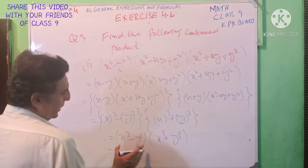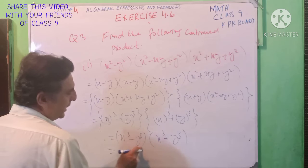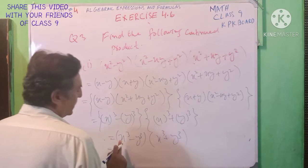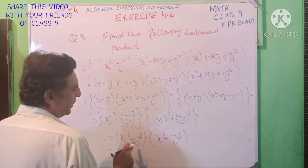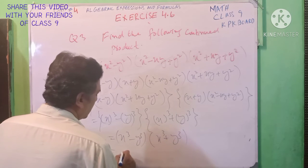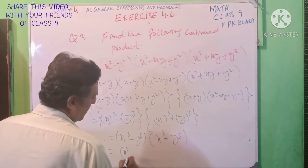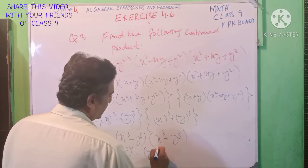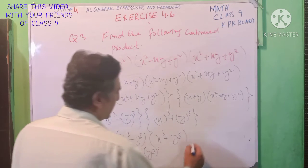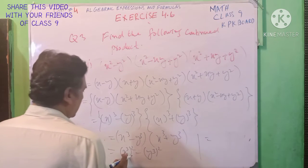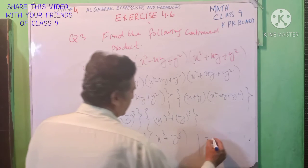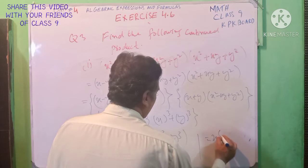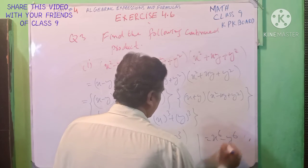This is our formula: a minus b and a plus b. a value is x cube and b value is y cube. This is our formula: a square minus b square. Last, applying the formula gives x⁶ minus y⁶.